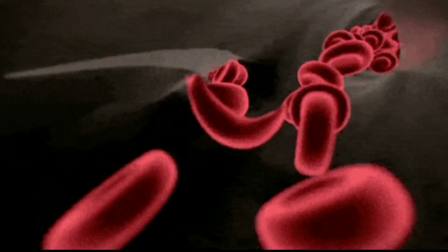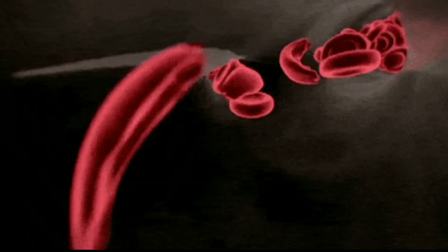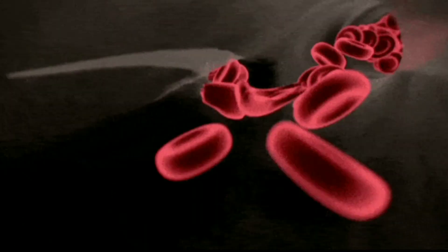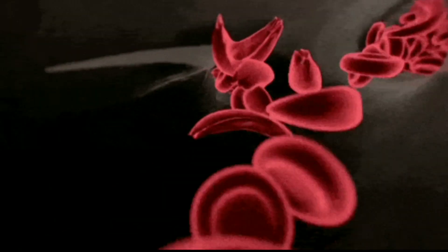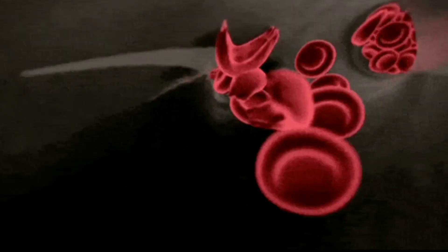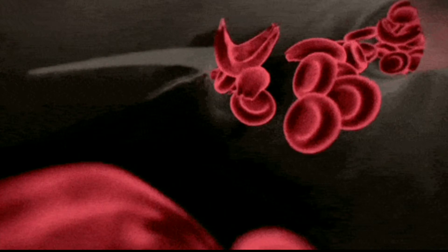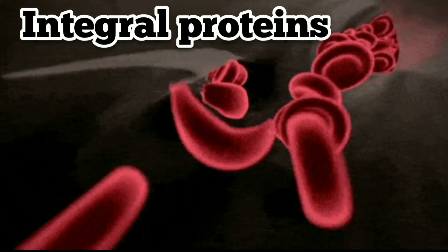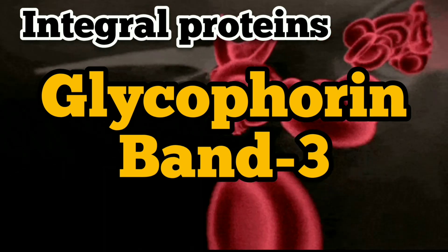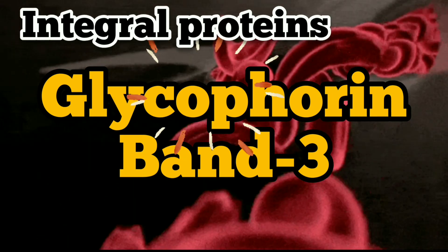Studies of red blood cells have provided good examples of both peripheral and integral proteins associated with the plasma membrane. The membranes of human erythrocytes contain about a dozen major proteins, originally identified by gel electrophoresis of membrane preparations. The most abundant peripheral membrane protein of red blood cells is spectrin, a major cytoskeletal protein of erythrocytes. Other peripheral membrane proteins include actin, ankyrin, and band 4.1. Ankyrin serves as the principal link between the plasma membrane and cytoskeleton by binding to both spectrin and the integral membrane protein band 3.